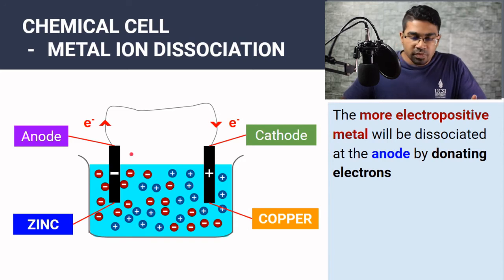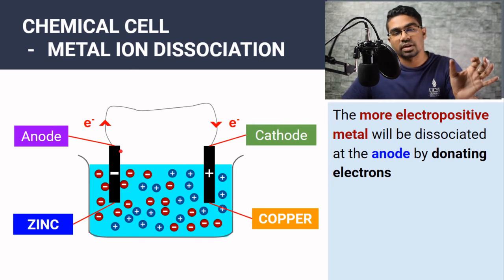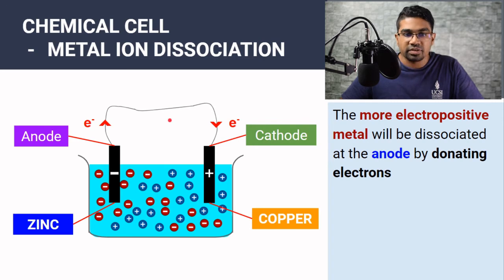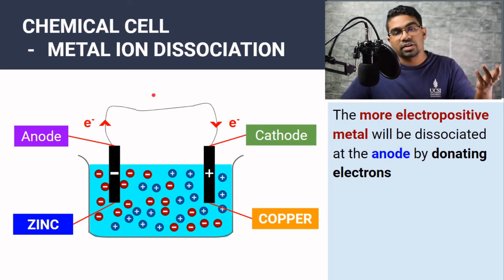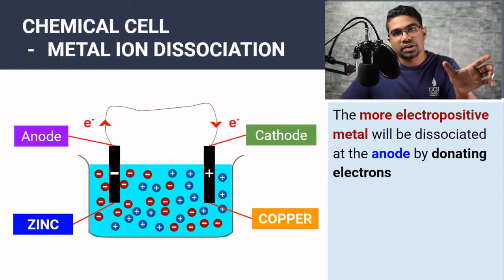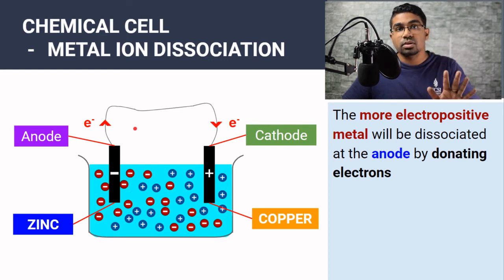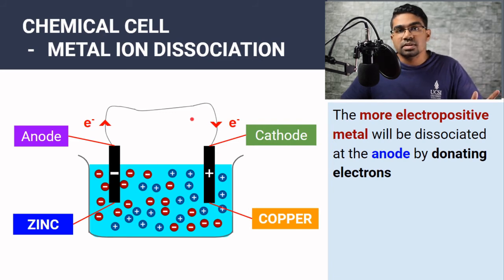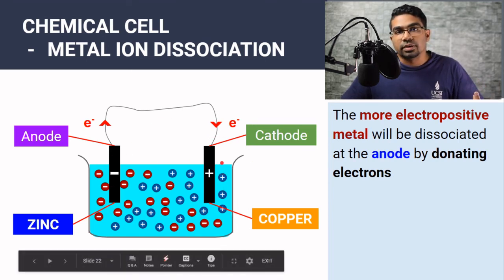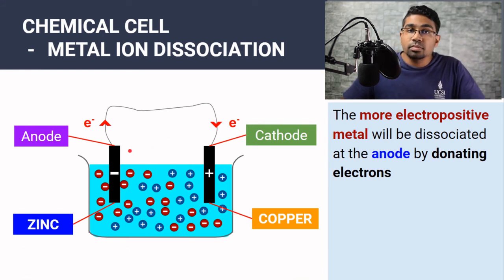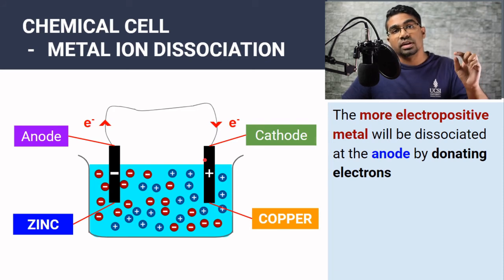Let's study the reactions at the electrodes. In an electrolytic cell there is an external power source — a dry cell — that drives electron movement. But in a chemical cell there is no dry cell; in fact, a dry cell is itself a chemical cell. There is no external driving force, so what causes the electrons to flow? It is the difference in the electropositivity of the metals. That's why using the same type of metal for both electrodes would produce no electron flow.